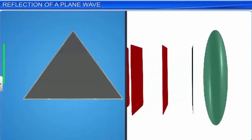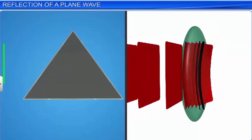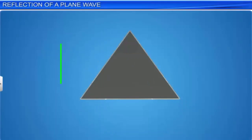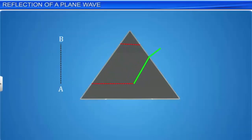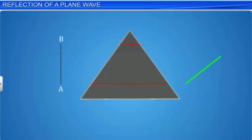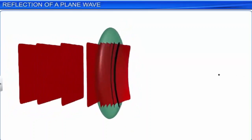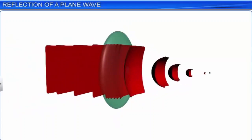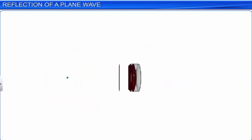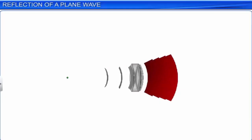Let us now understand the behavior of a plane wave front as it undergoes refraction through a prism as well as through a lens. Consider a plane wave front AB passing through a glass prism. As the wave front AB passes through the prism, the point A travels for longer distances in the glass than the point B. Since the speed of light is less in glass, point A and the lower portion of the wave front passing through the prism are delayed, and as a result, there is a tilt in the emerging wave front A'B'. When a plane wave front is refracted through a convex lens, it becomes a converging spherical wave front and converges at a point on the principal focus. On the other hand, if a plane wave front is refracted through a concave lens, we get a diverging spherical wave front.